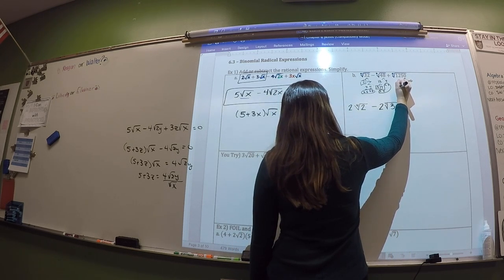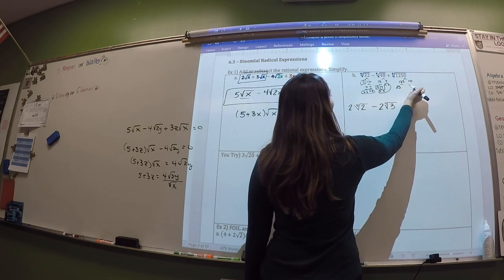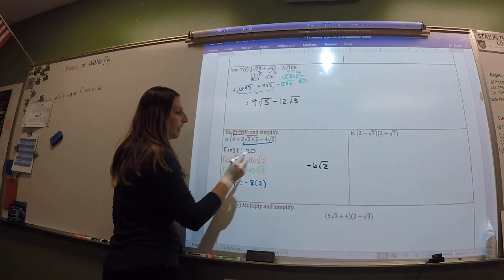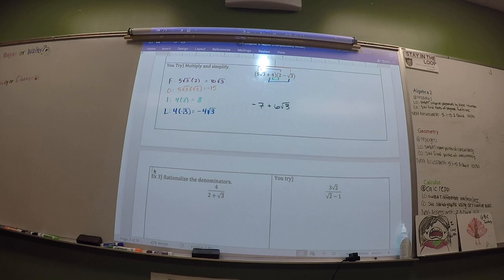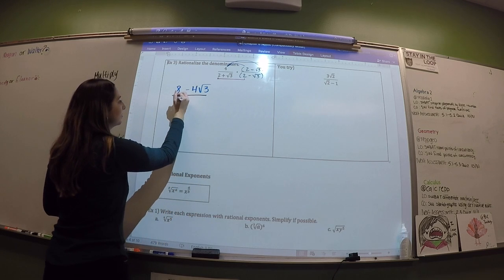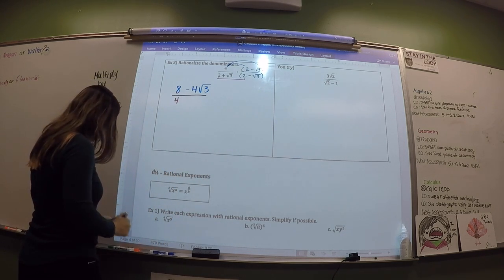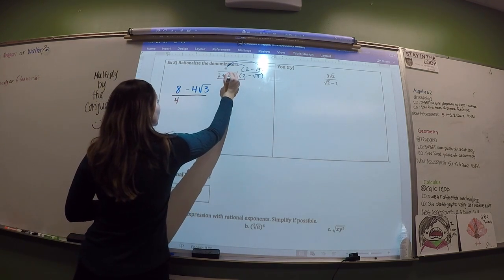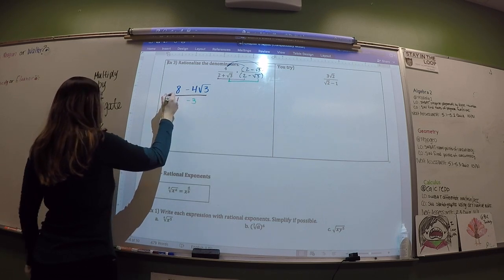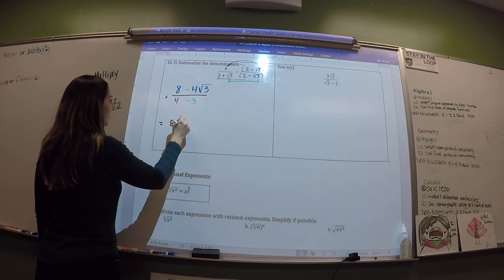Let's look at what we have here. We have a square root of x, a square root of x — those are the same. But this one is a square root of 2x, so that's different. And this one is a square root of x. So the blue stuff is all the same, but the green stuff is different, which means so far I can combine the blue stuff.